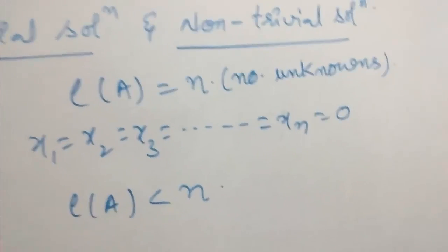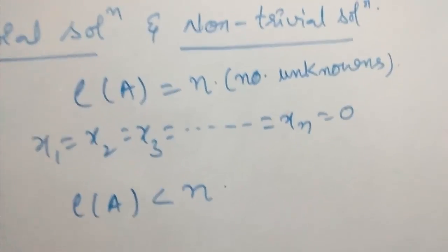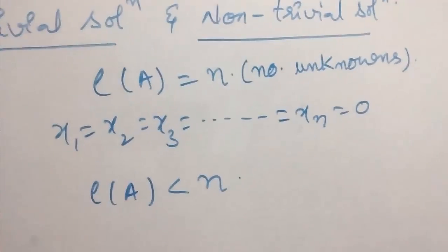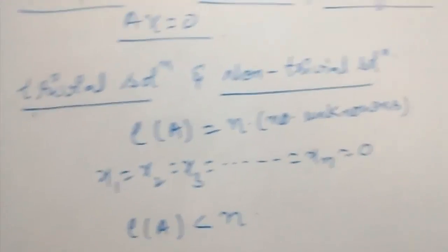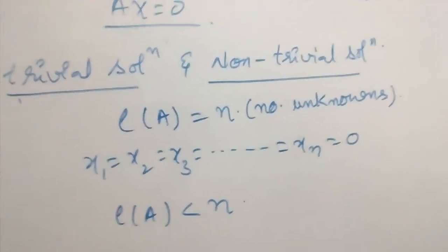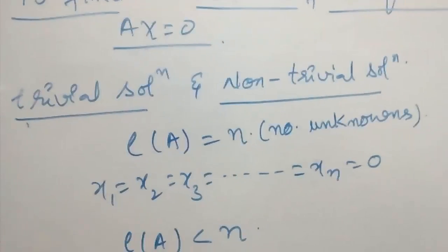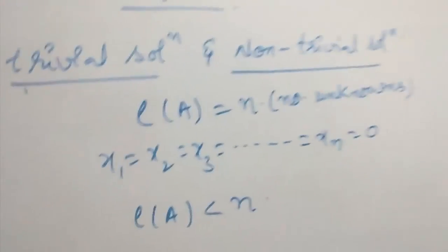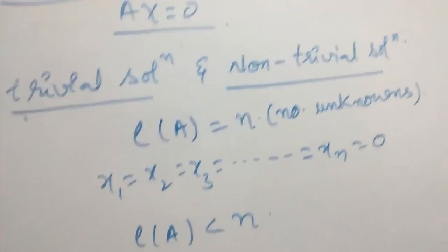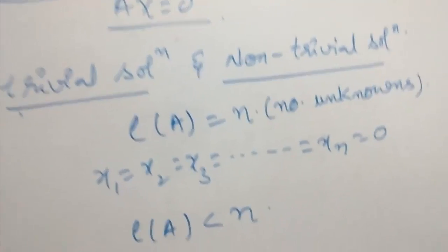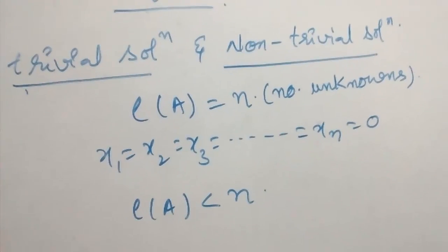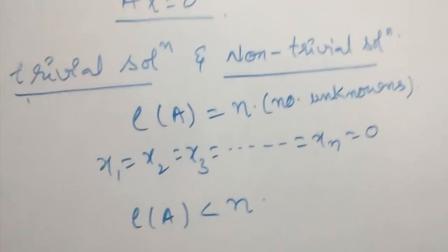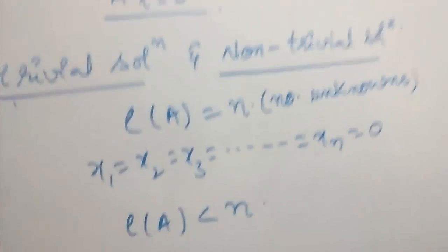This is the method for finding the system of equations — whether trivial or non-trivial solution. If you look at the problem it will be more clear, because you have already learned how to find consistency and inconsistency. In the same way we are going to find the trivial solution and non-trivial solution. Let's see the problem.